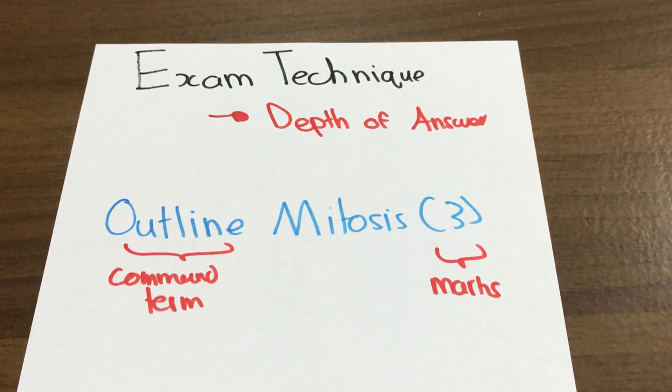Continuing with exam techniques for Bio Paper 2 Section B, this video will show you how to figure out how much you need to write in an answer. What level of depth are you aiming for to maximize your marks but not write too much and waste time writing more than you need to?